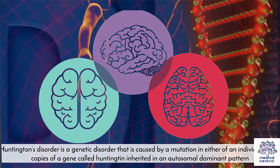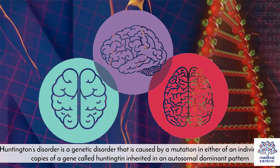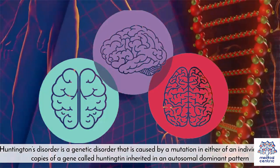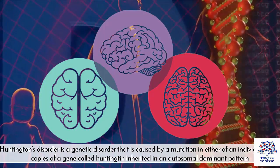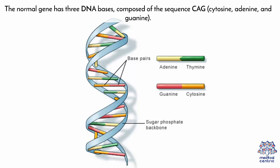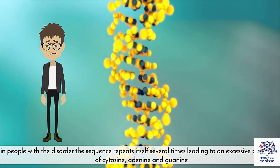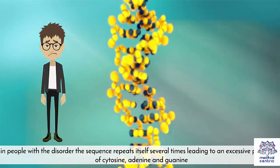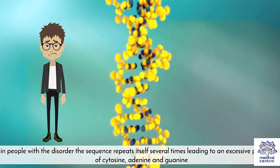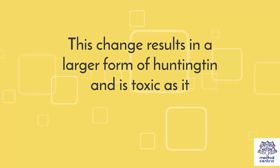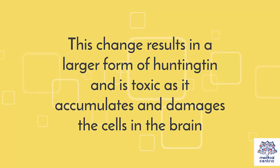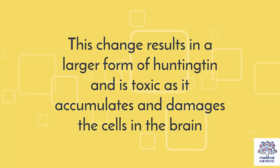Huntington's disorder is a genetic disorder caused by a mutation in either of an individual's two copies of a gene called Huntingtin, inherited in an autosomal dominant pattern. The normal gene has three DNA bases composed of the sequence CAG – cytosine, adenine, and guanine. In people with the disorder, the sequence repeats itself several times, leading to excessive production of cytosine, adenine, and guanine. This change results in a larger form of Huntingtin that is toxic as it accumulates and damages cells in the brain.